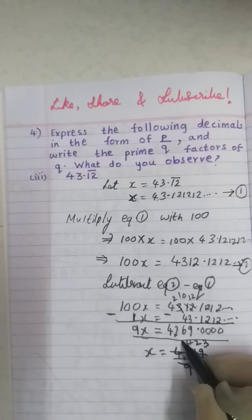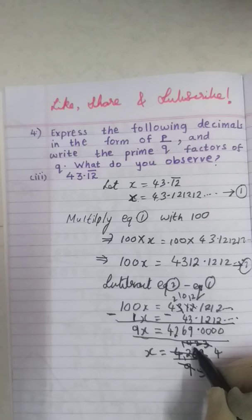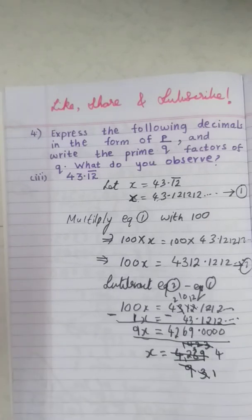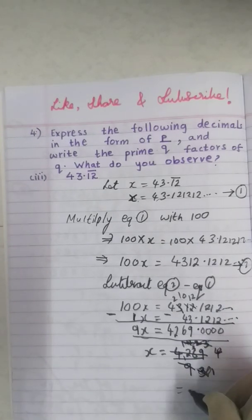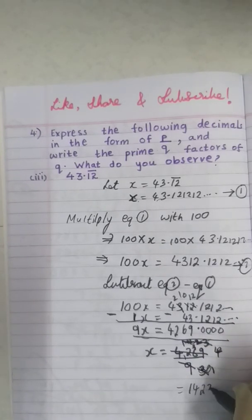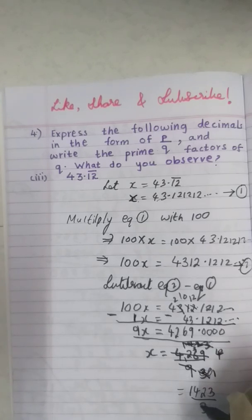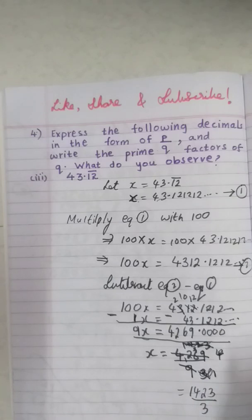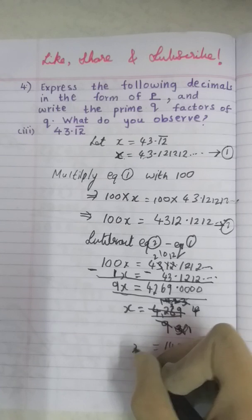Again it will go in 3 table. 3 x 4 is 12, 1, 2. 3 x 4 is 12. 3 x 1 is 3. 3 x 4 is 12. 4 minus 2 is 2. So it becomes 3 x 7 is 21. No, it will not go. So what will I write here? It is 1423 by 3 only, because you cannot divide 1423 by 3.